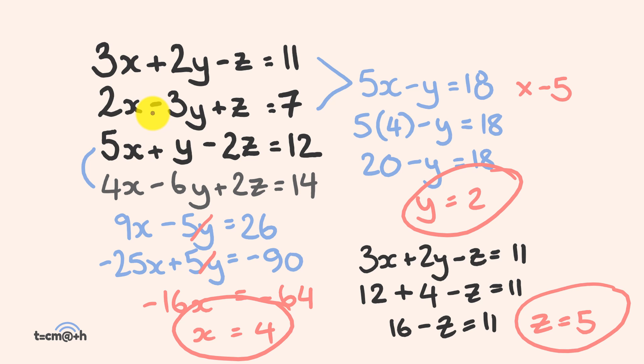You can go through and substitute these in to check. For example, 2 times 4 is 8, minus 6 plus 5 is 7 — correct. And 20 plus 2 is 22, minus 2 times 5 which is 10, so 22 minus 10 equals 12 — correct. That's how you solve simultaneous equations using the elimination method with three variables, reducing from three equations down to two, then down to one. Thanks for watching, see you next time!